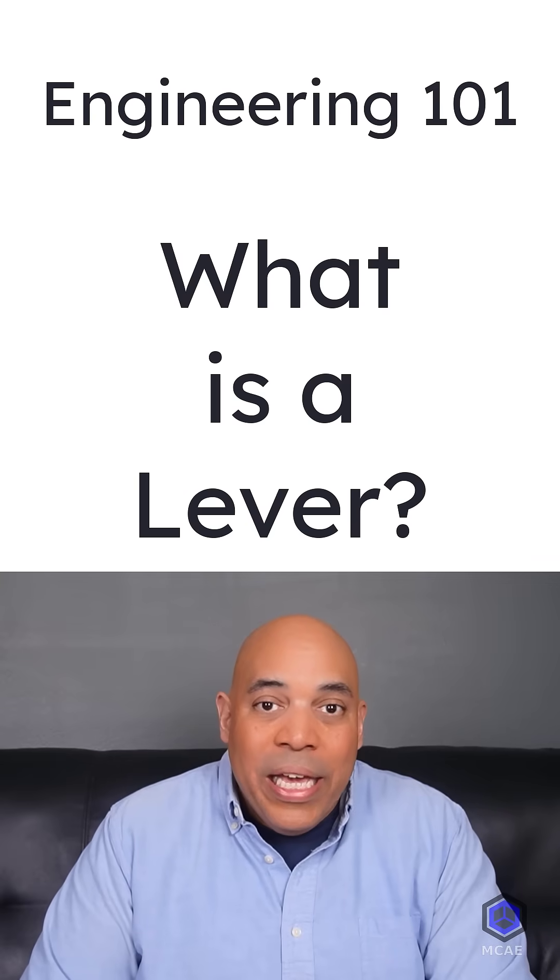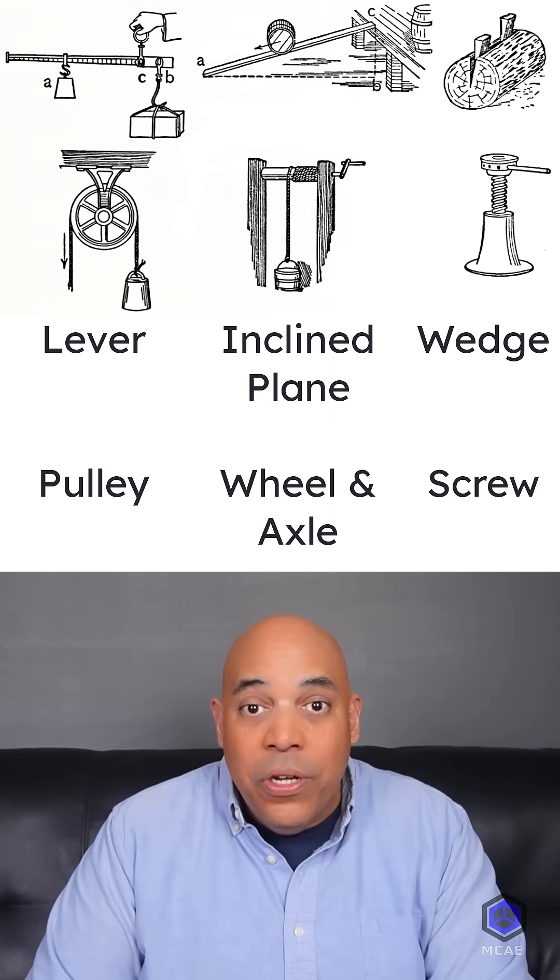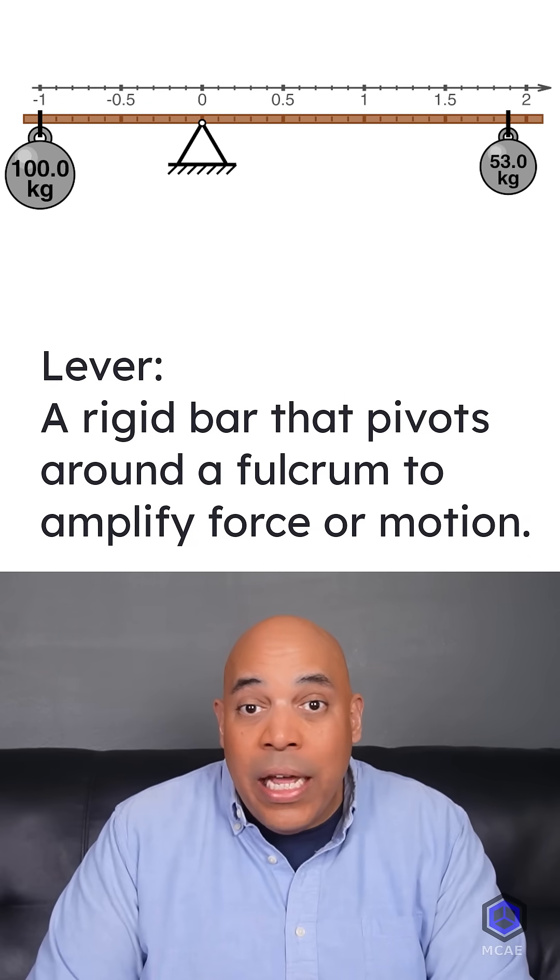A simple machine is a mechanical device that changes the direction or magnitude of a force. The lever is a bar that pivots on a fulcrum.